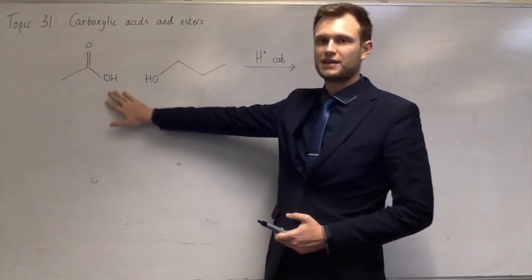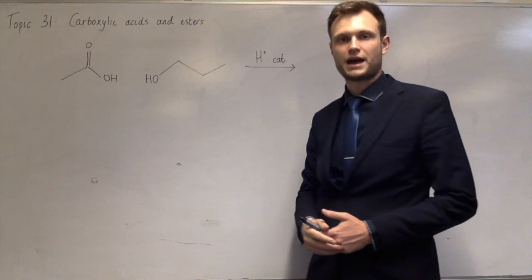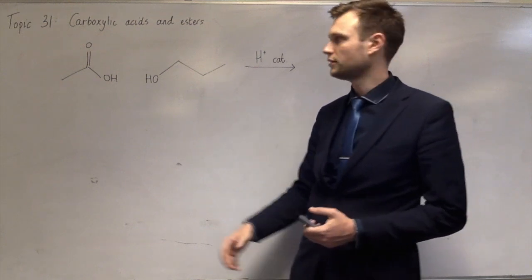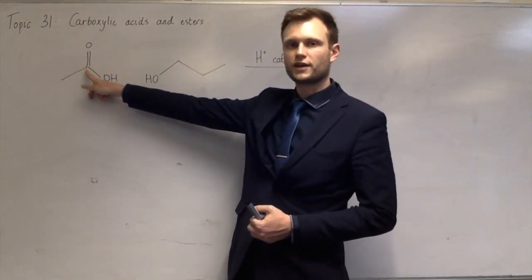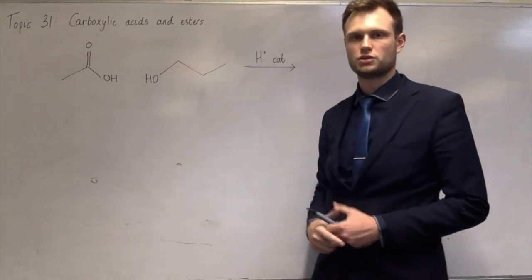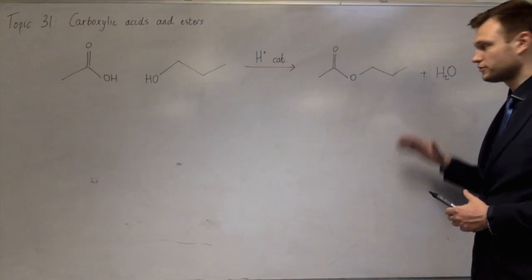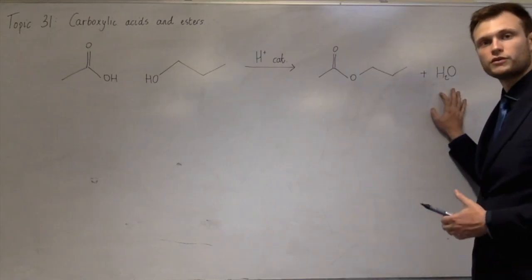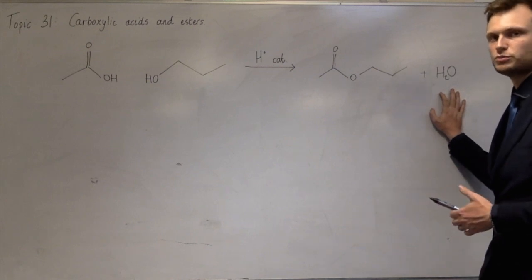So the OH from the carboxylic acid and one of the hydrogens from the alcohol gets lost as water. And you end up with a bond between the carbon of the carbon-R group and this oxygen of the alcohol group. And don't forget this water molecule. More often than not, that's forgotten and loses people's marks.